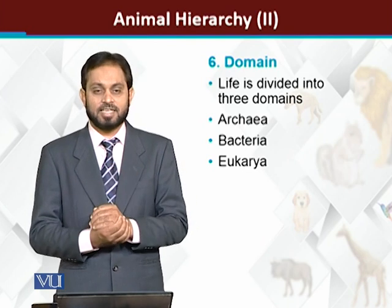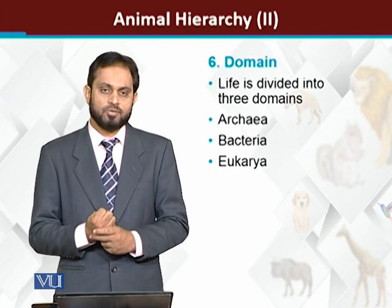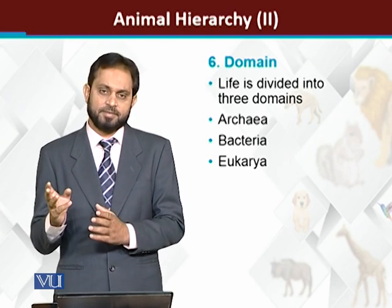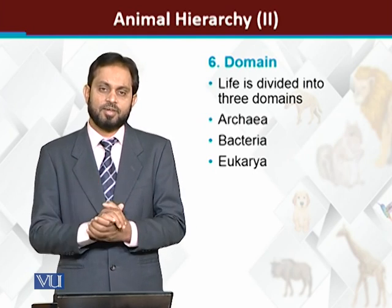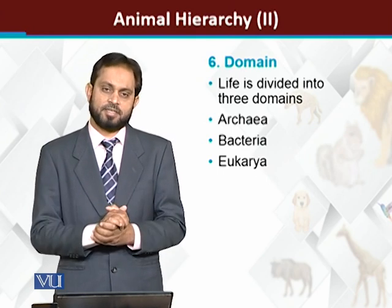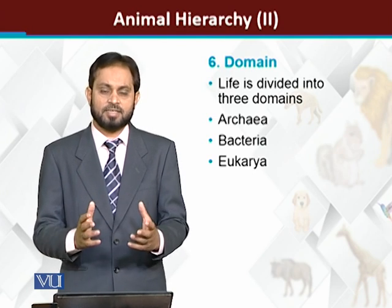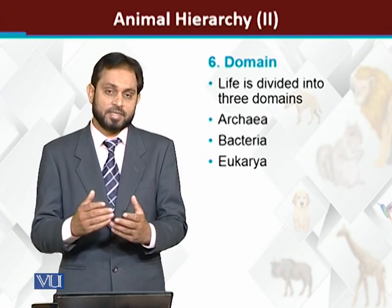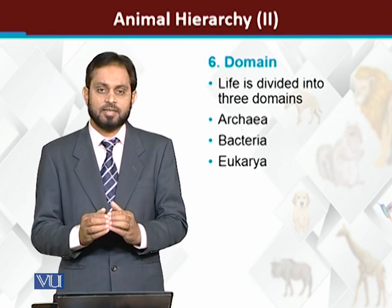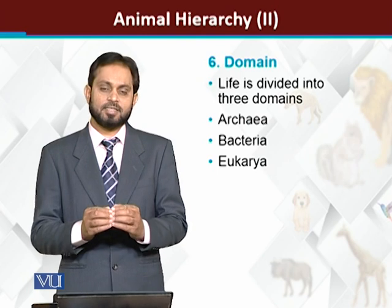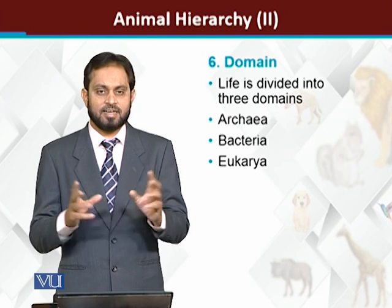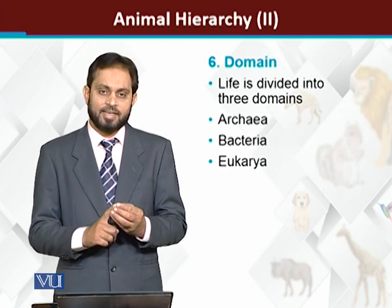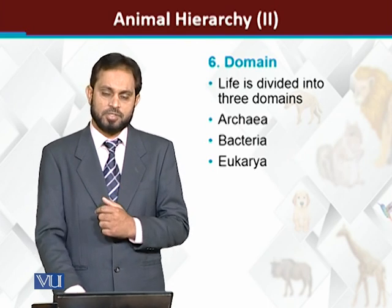In normal classification, we go up to kingdom level. However, there is another classification pattern — the domain-based system. In domain classification, life is divided into three major domains. The first domain is Archaea — ancient bacteria that are still surviving in extreme conditions. The second domain is Eubacteria — true bacteria. The third domain is Eukarya, which includes all eukaryotes: plants, fungi, and animals — all placed in one domain.